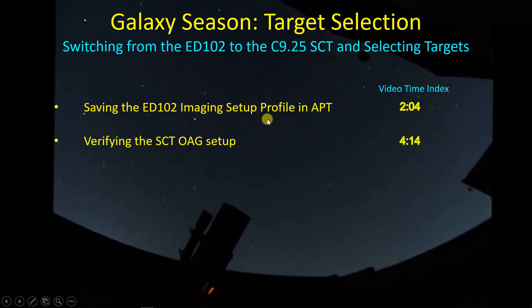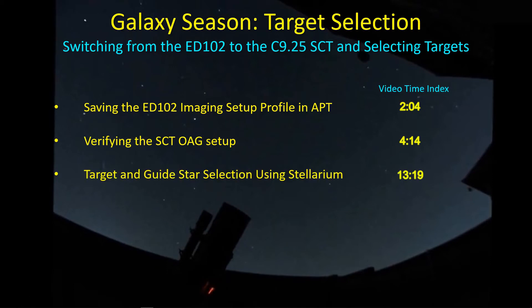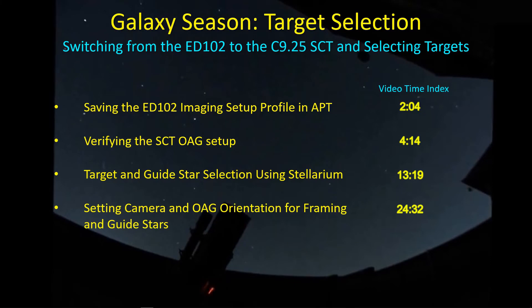After I get done changing out the ED-102 profile for the SCT profile, I want to go back and take a look at my off-axis guider setup based on some images and studies I did with Stellarium. And then we'll take a look at using Stellarium to select targets and guide stars for those targets. After that, we will set the camera settings and orientation for framing and the guide stars. So let's head over to Astrophotography Tool for a minute.